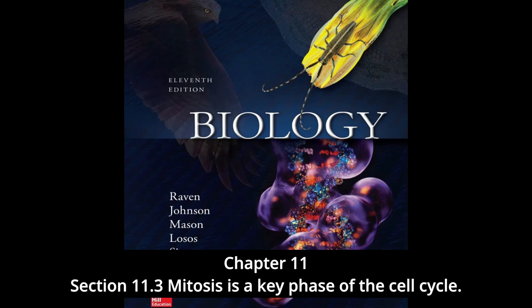Metaphase: alignment of the centromeres. The second stage of mitosis, metaphase, is the phase where the chromosomes align in the center of the cell. When viewed with a light microscope, the chromosomes appear to array themselves in a circle along the inner circumference of the cell, as the equator girdles the earth. An imaginary plane perpendicular to the axis of the spindle that passes through this circle is called the metaphase plate.